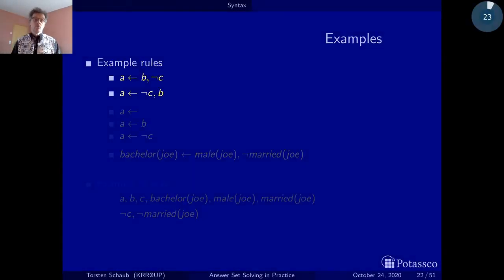Before we do this, let's look at some examples. The first two rules actually represent the same rule. They just emphasize that the order of the body literals does not matter because they are a set. So the first rule can be read as a is derivable if b is derivable and c is not derivable. Or a holds if b holds and c does not hold. And the second rule is just the same. It doesn't matter if I now reread the same thing differently.